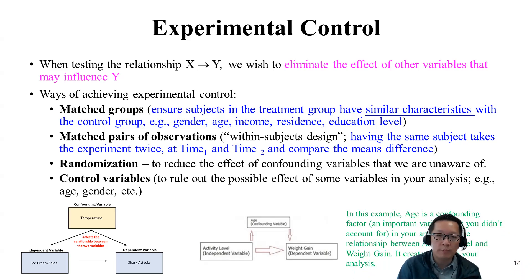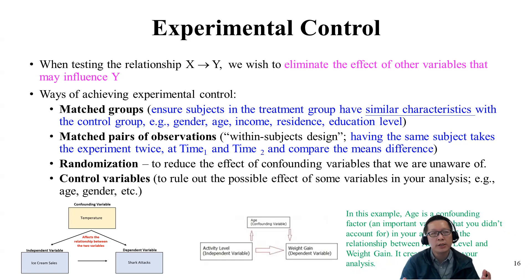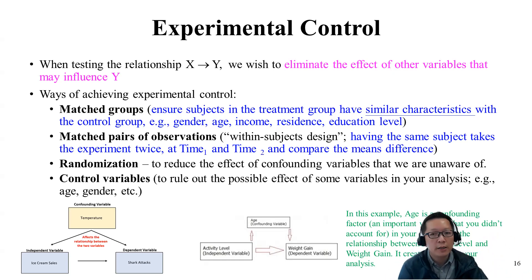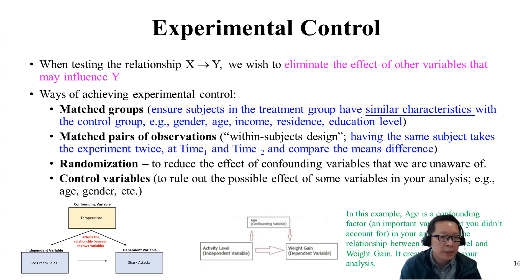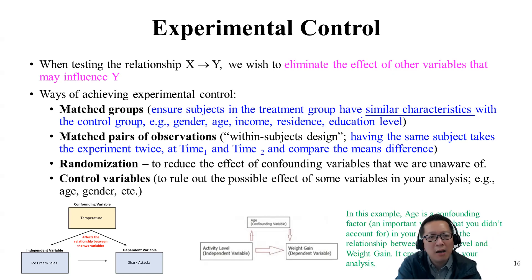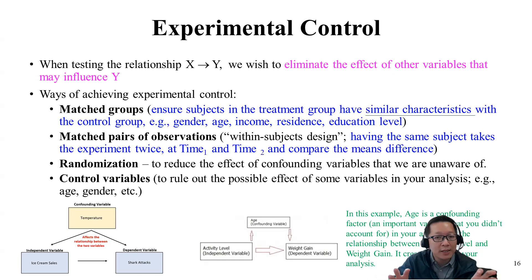Randomization is also super important because it can reduce any unwanted variables — sometimes called confounding variables — that could affect the results. Control variables are also important: these are other factors that possibly contribute to your findings that you want to rule out, such as age, gender, company size, industry type, or job tenure. If you can rule out that these basic factors are not affecting the main relationship between your independent and dependent variable, you have more confidence in your results.